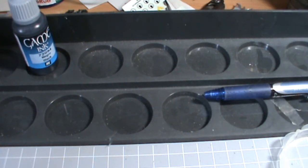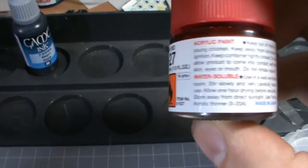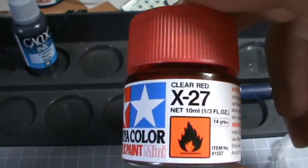Now believe it or not, there is not one color from Games Workshop which you can use to really come up with a really good fast gore. What you're actually going to need to do is go to a company called Tamiya, or Tamiya depending on where you're from. And you want in the clear range, clear red X27.